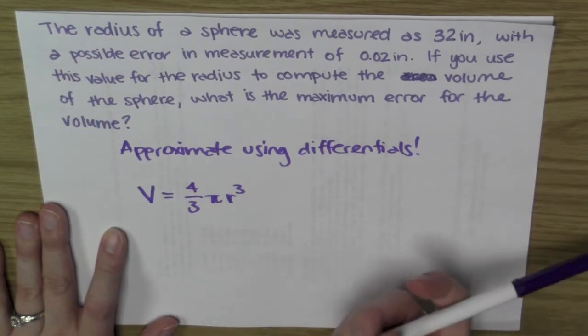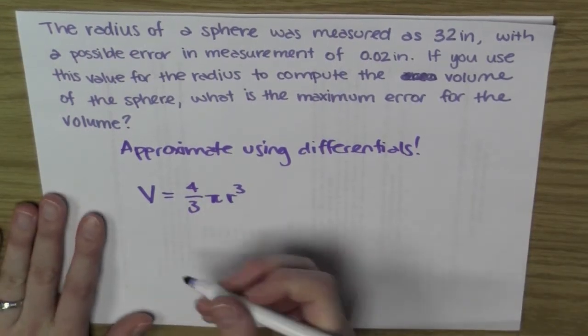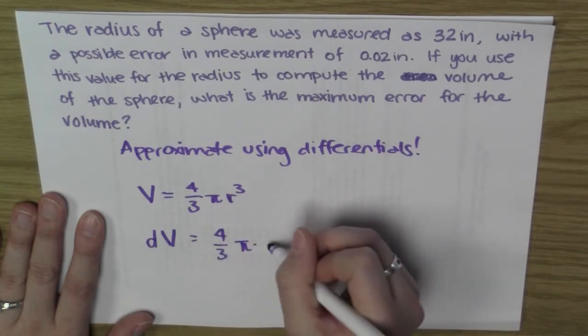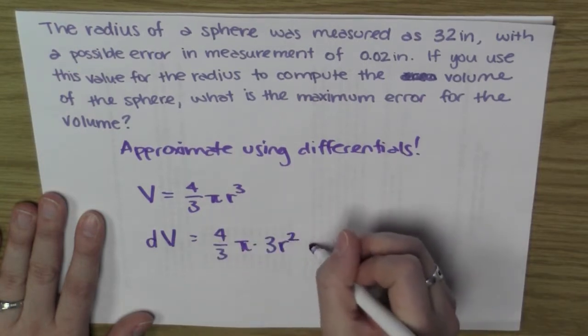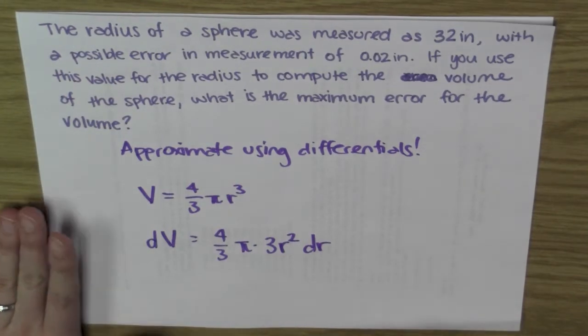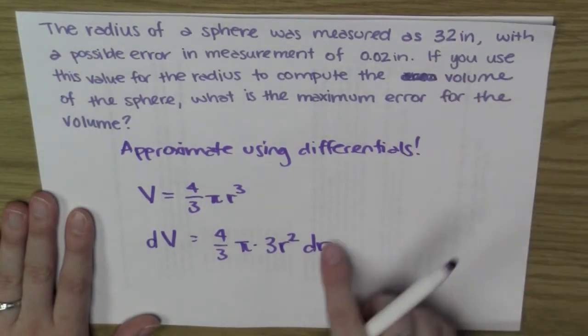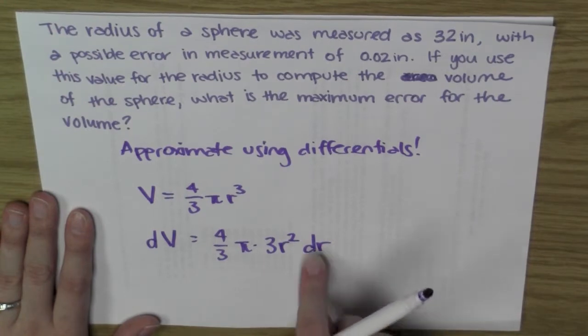Okay, so let's just differentiate both of these sides using differentials. I get dV is equal to 4/3 times pi times 3r squared dr. And now I know most of these values. I know what the radius is, because someone has measured it for me, and I know what the change in r is, because I know that the error could be at most 0.02 inches.